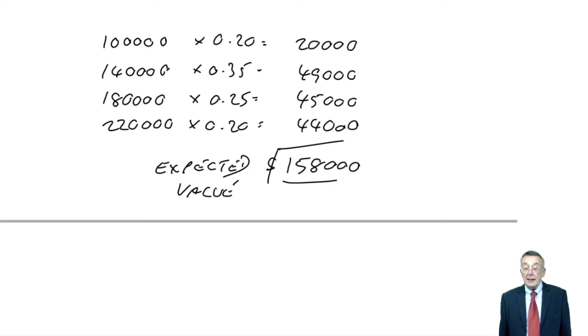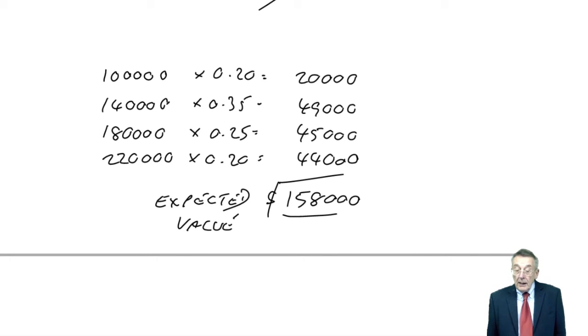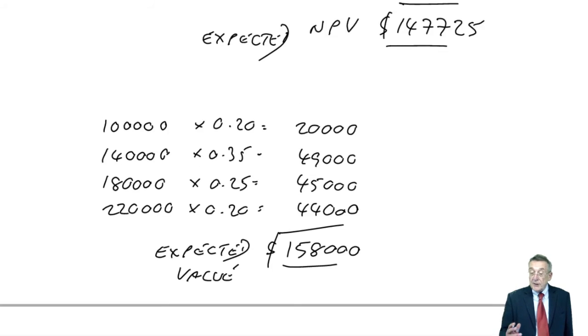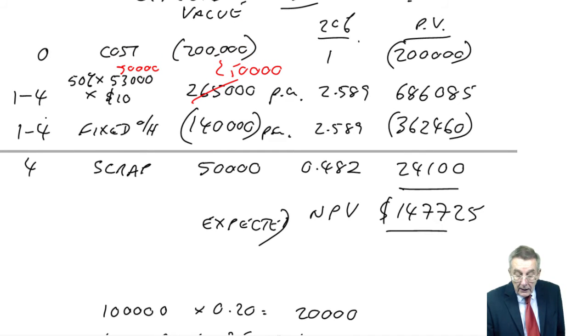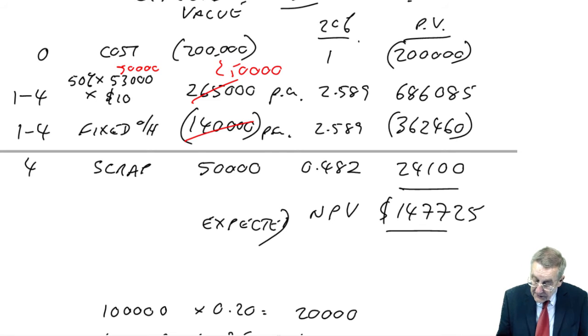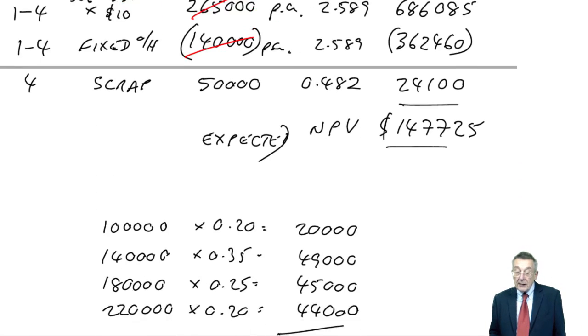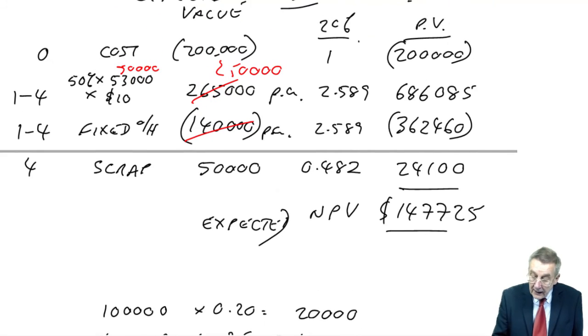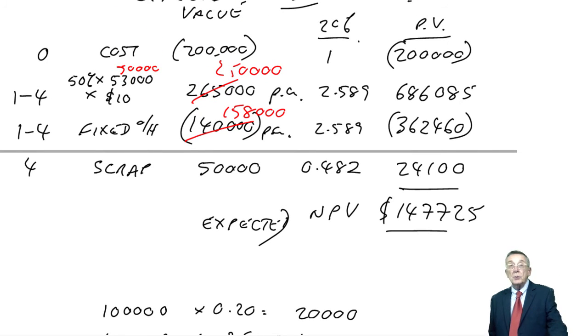And again, I'm sorry, I am not going to discount. You can check the answer yourself in the notes. But exactly like before, except, as I've already said, contribution, it says now the demand is 50,000. And therefore, contribution is fixed at 250. It's the fixed overheads now that are uncertain. And so instead of using 140, we would use 158. Discount as normal. The NPV would be different, but that would be the expected NPV in that case.